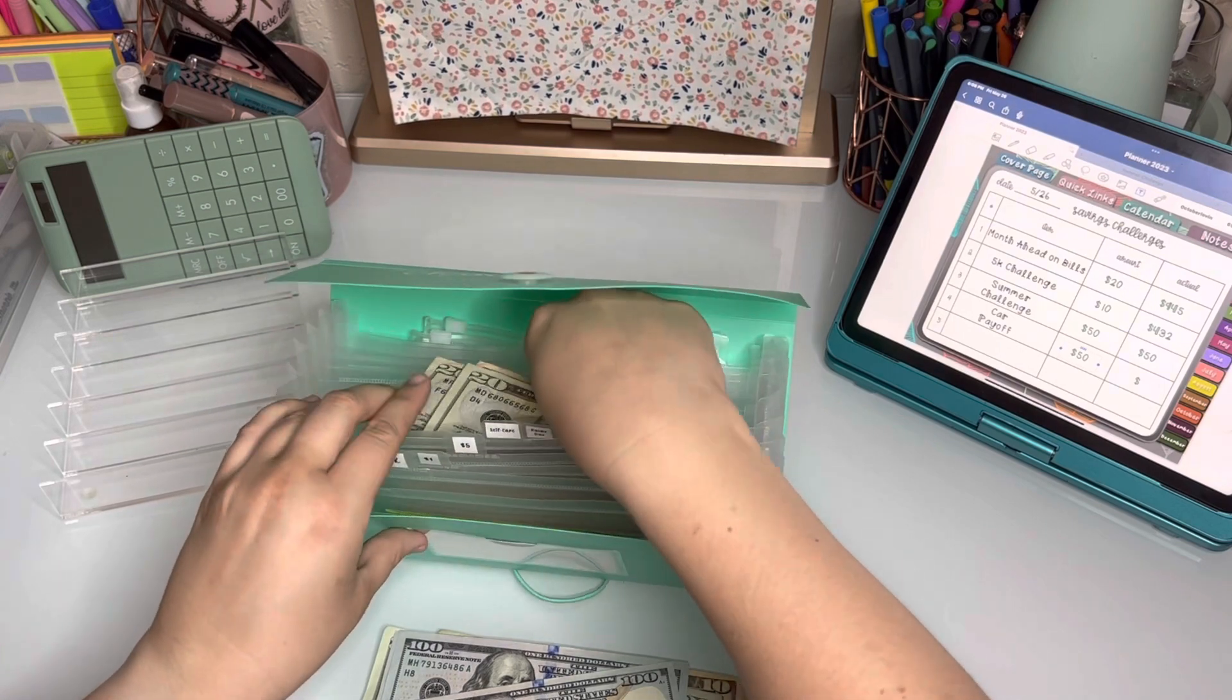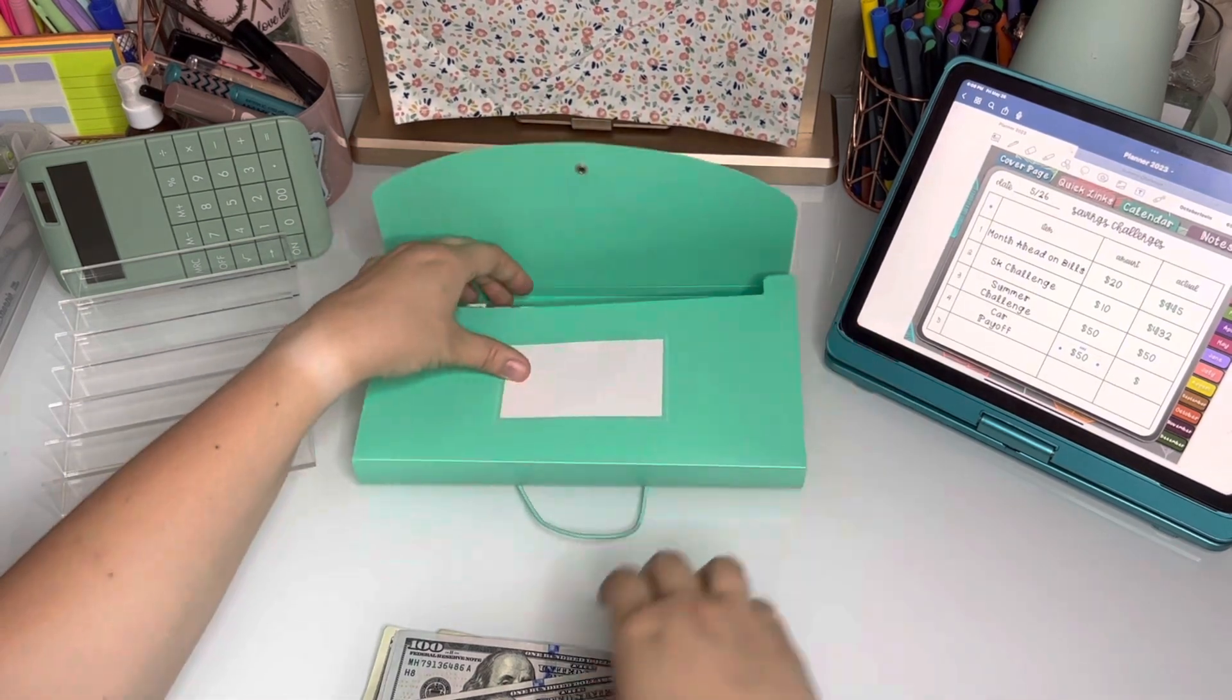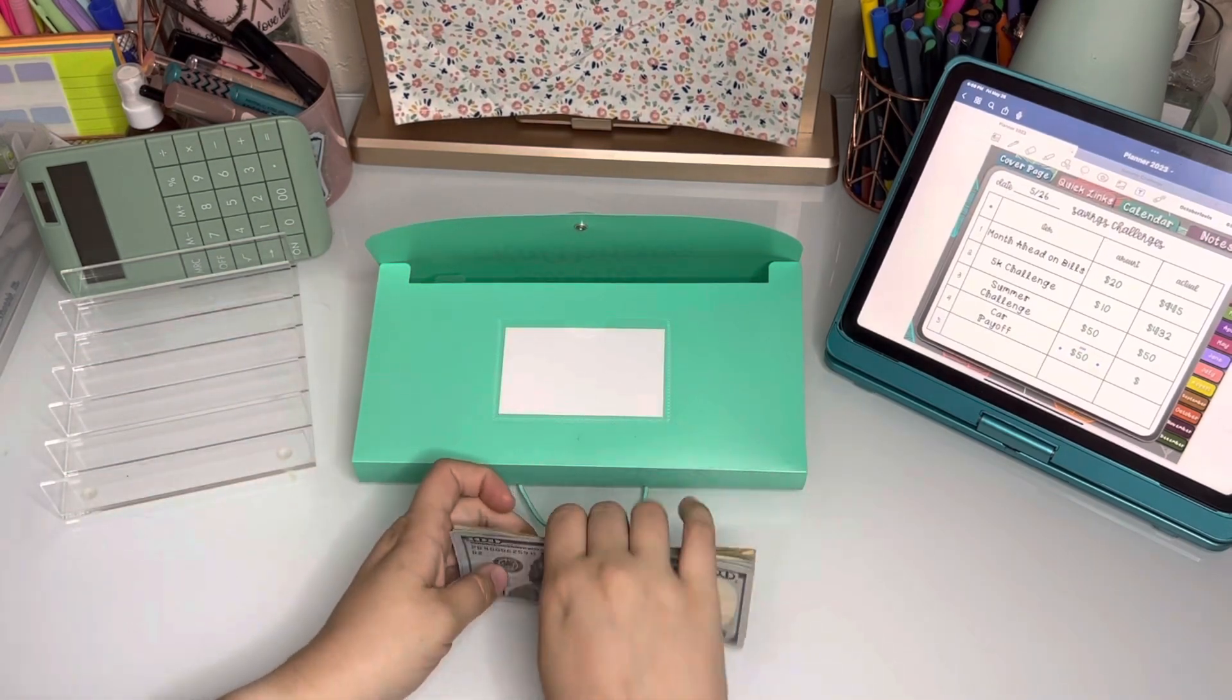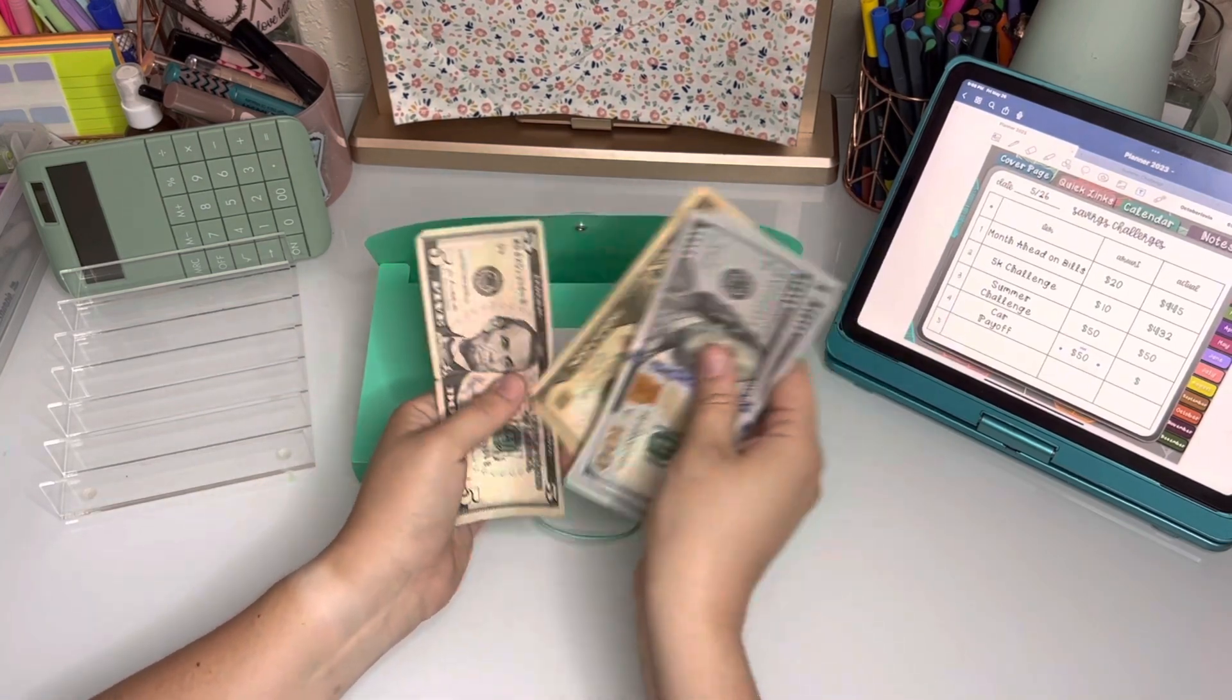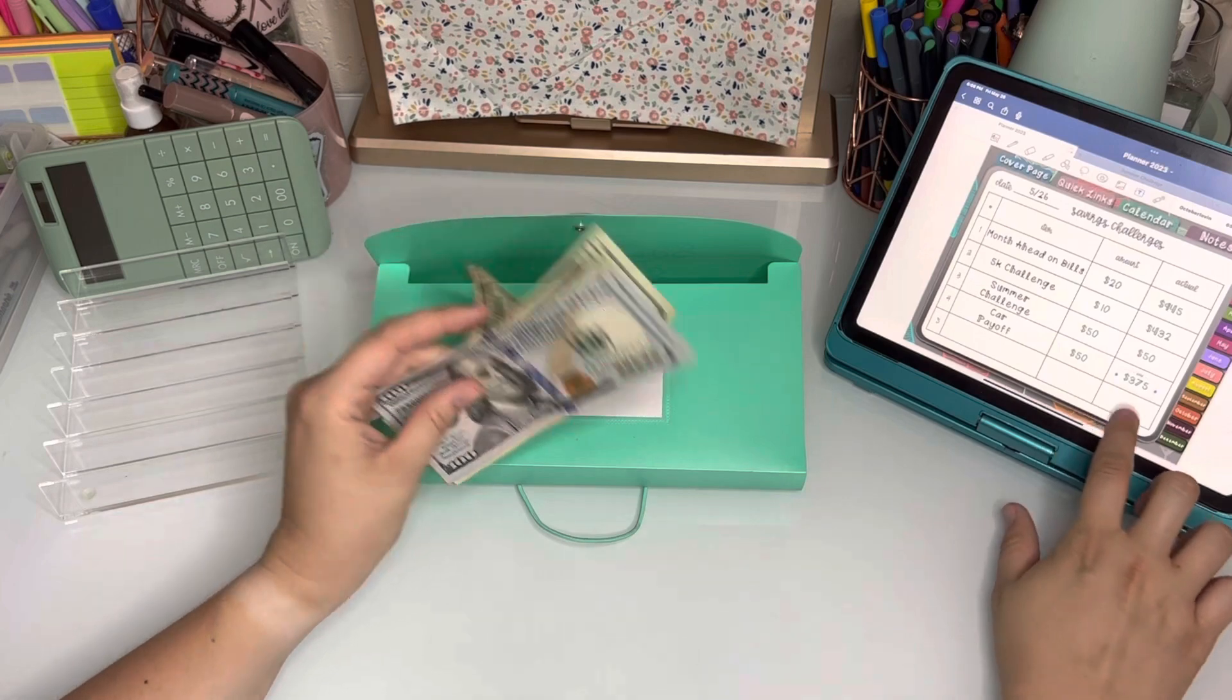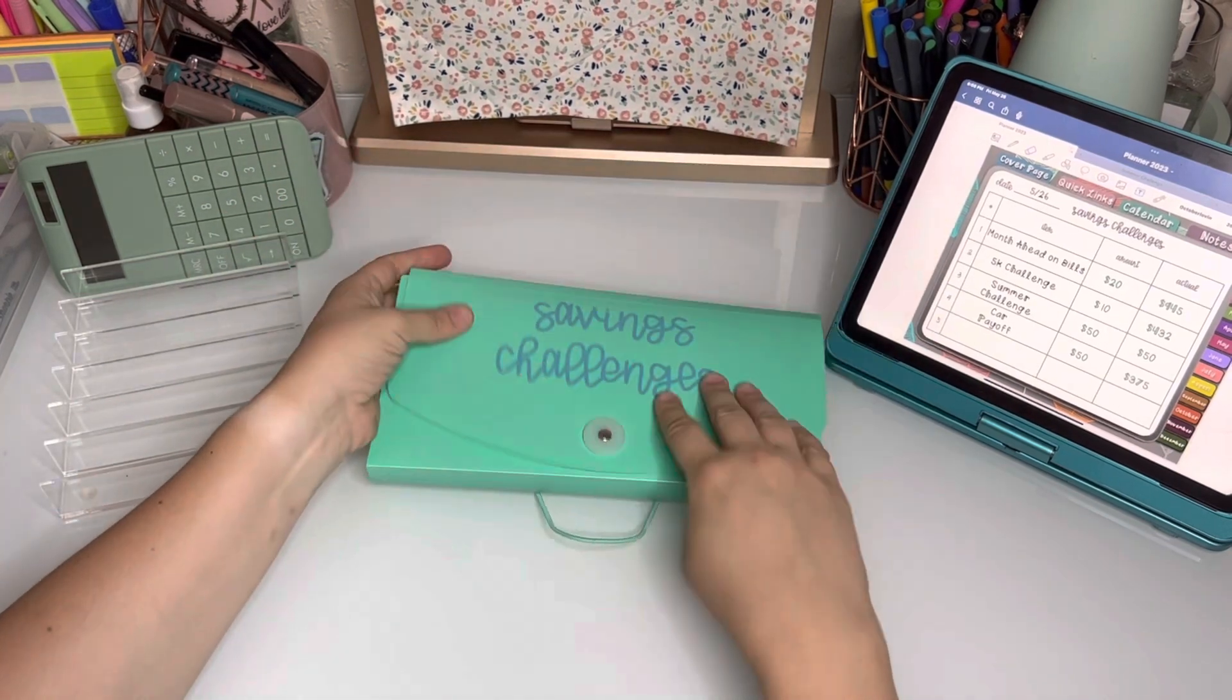Let's recount the car payoff. I like to get them nice and even in there. So with the $20 now, we should have $375. [counts money] $375, which was the original amount, is going in car payoff. And that is a full month's worth and a little bit extra of my car payment.